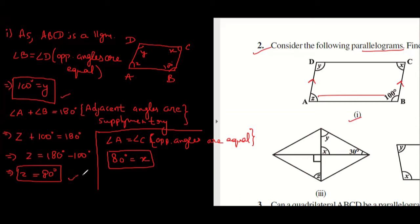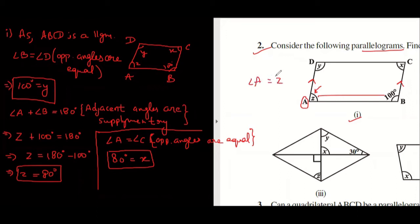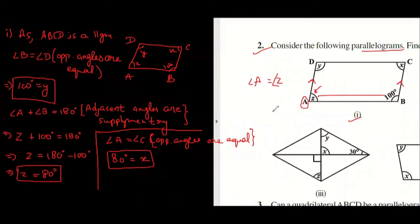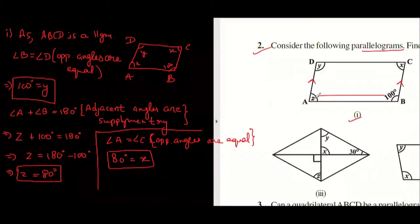That's why boxing is important. These are the vertices and these are the values of the angles. I have to write angle A equals Z, not 'angle Z'. We write 30 degrees — value does not come with the symbol of angle. Whenever we write the angle we write 'angle', whenever we write the value we write just X, Y, Z.